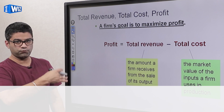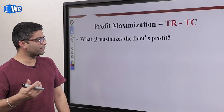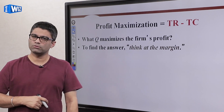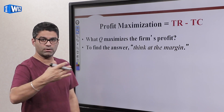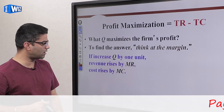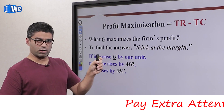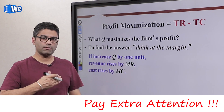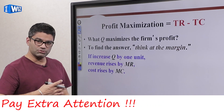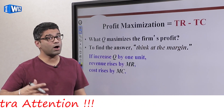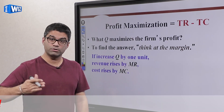Profit maximization means total revenue minus total cost. To understand how much to produce to maximize profit, we have to think at the margin. Our Baker is going to think about MR and MC. If we increase quantity by one unit, MR represents how much revenue rises by producing one more unit, and MC measures how much costs rise when producing that one more unit.